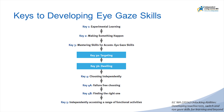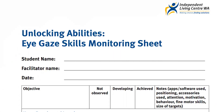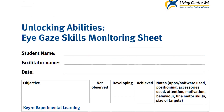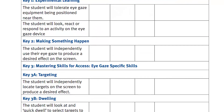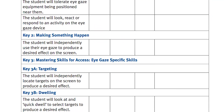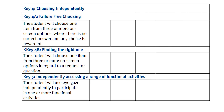This is not a fixed progression and students may be developing skills in multiple keys at one time. The Unlocking Abilities Monitoring Sheet can help track the key skills a student is demonstrating and may be used to assist with setting goals to progress their skills.